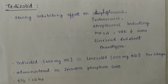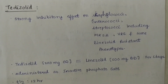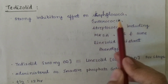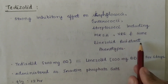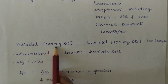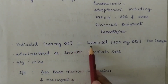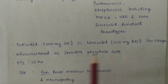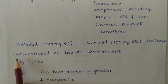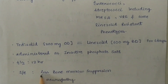Now we will discuss tedizolid, which is the second compound of the oxazolidinones. It has a strong inhibitory effect on staphylococci, enterococci, and streptococci, including MRSA, VRE, and sub-linezolid-resistant phenotypes. Tedizolid at a dose of 200 mg once daily is equal to linezolid at 600 mg twice daily for six days — hence tedizolid is the more potent one. It is administered as an inactive phosphate salt. The half-life is 12 hours. Side effects: it causes less bone marrow suppression and less neuropathy.